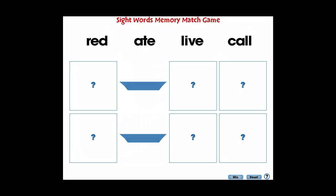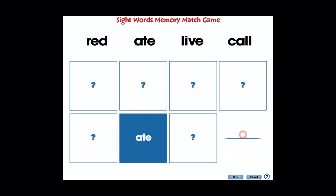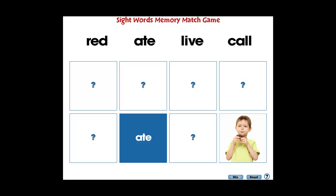Find the hidden pairs in the puzzle. Touch a card to reveal a different Dolch sight word or image, then find its matching sight word or image.